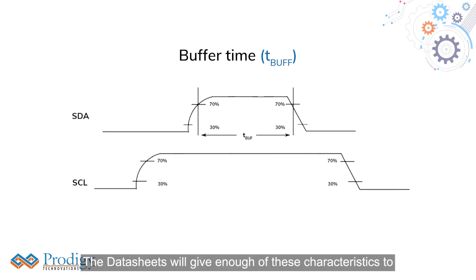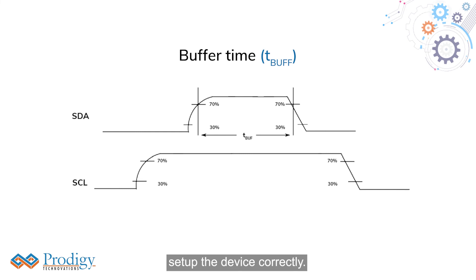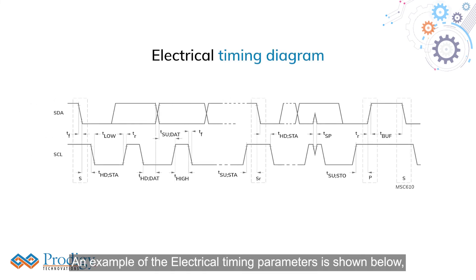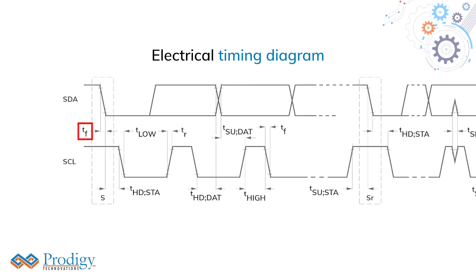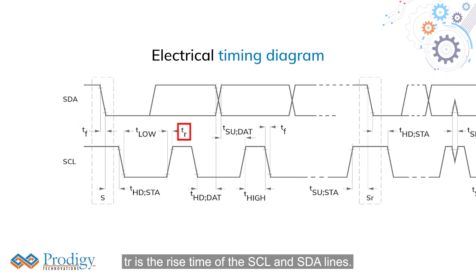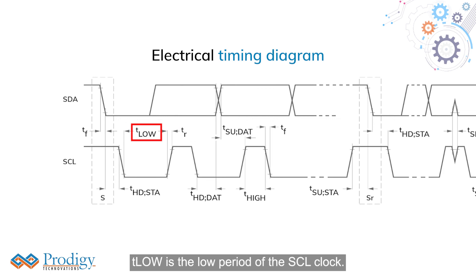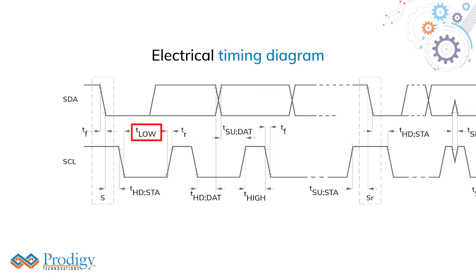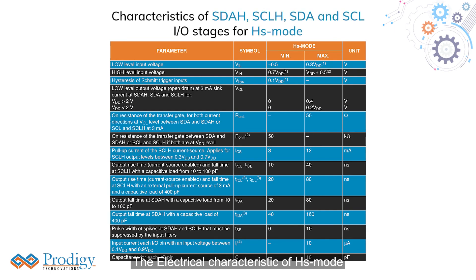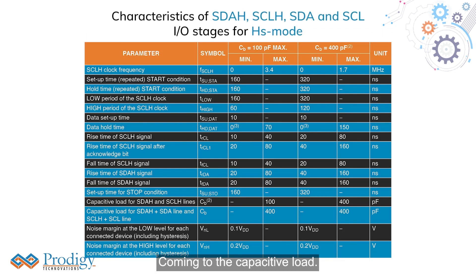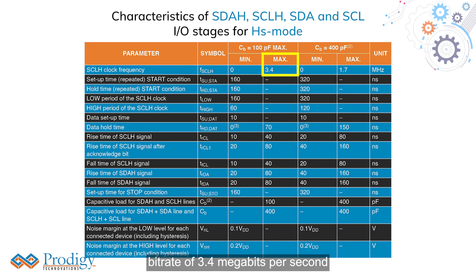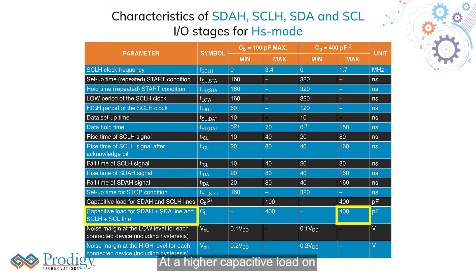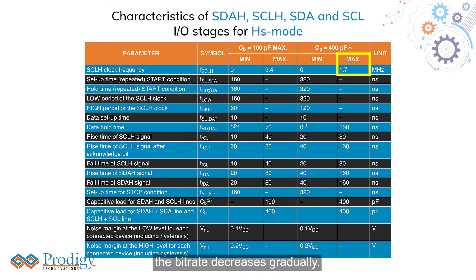The datasheets will give enough of these characteristics to set up the device correctly. An example of the electrical timing parameters is shown below. TF is the fall time of the SCL and SDA lines, and TR is the rise time of the SCL and SDA lines. T-low is the low period of the SCL clock. The electrical characteristic of HS mode is shown below. Coming to the capacitive load, timing parameters are independent for capacitive load up to 100 pF for each bus line, allowing the maximum possible bitrate of 3.4 megabits per second. At a higher capacitive load on the bus lines, the bitrate decreases gradually.